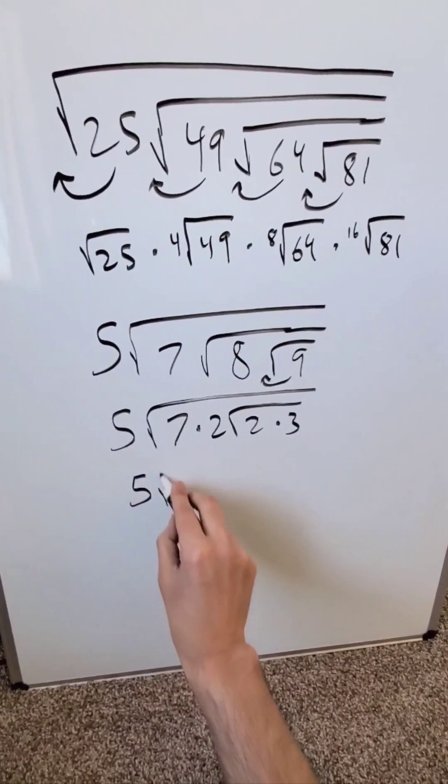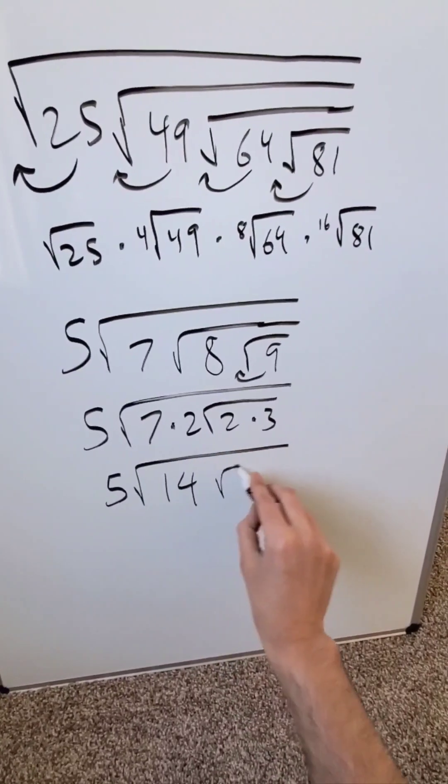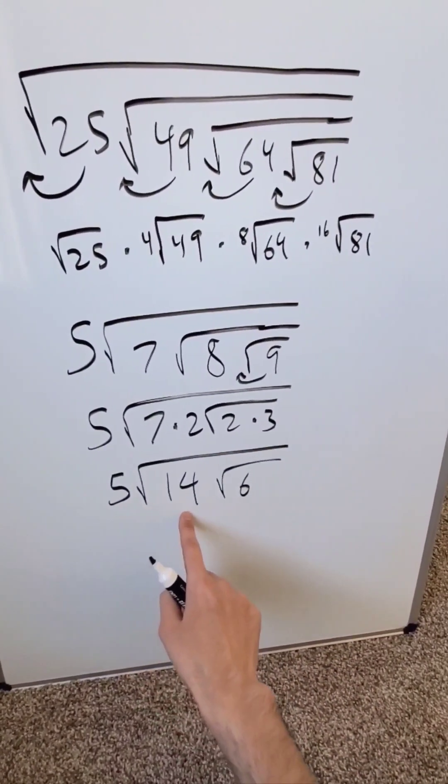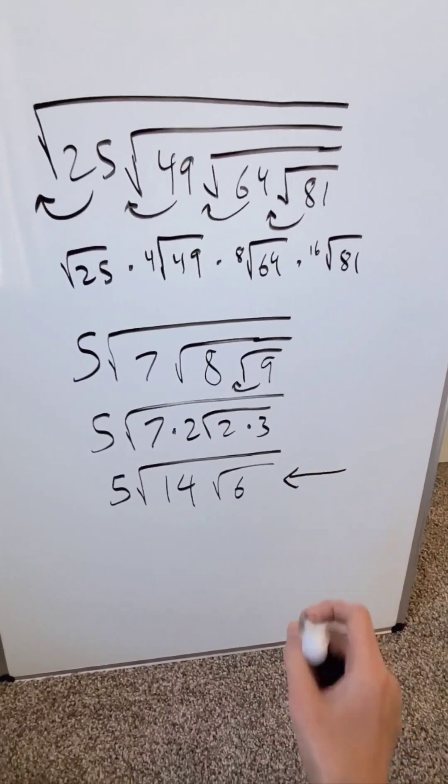When you simplify this you'll have a 5 and then a square root of 14 and then this root over here which would be a 6. So you're saying 5 times the square root of 14 times the fourth root of 6. This right here represents your evaluated expression.